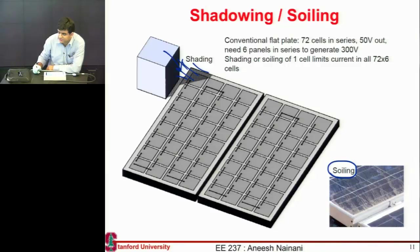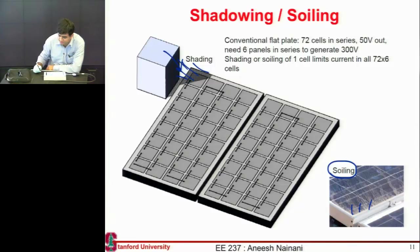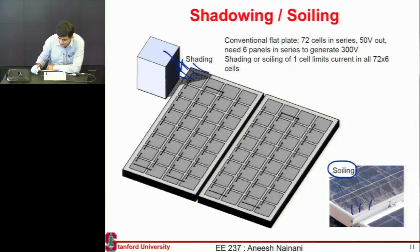A similar thing can happen if you place these panels somewhere in the Middle East or in a desert — you'll have soil coming in from the wind and it will get deposited on top of these panels. So what do you do to the panel to minimize these shadowing or soiling losses?